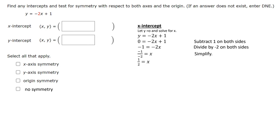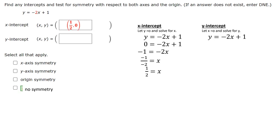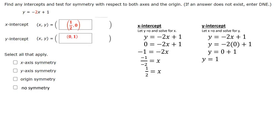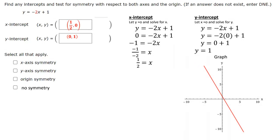To find the y-intercept, we set x equal to zero and then solve for y. When we set x equal to zero, negative 2 times zero is zero, and zero plus 1 is 1. So our y-intercept is equal to 1. This is a linear equation and this line will cross at these two points: when y equals zero, x is going to be 1/2, and when x equals zero, y will be 1.